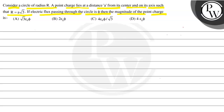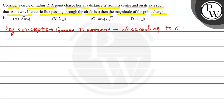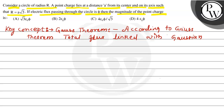For this purpose, we consider the key concept. Today we discuss the key concept, and that is Gauss's theorem. According to Gauss's theorem, the total flux linked with a Gaussian surface equals 1/ε₀ times Q enclosed.